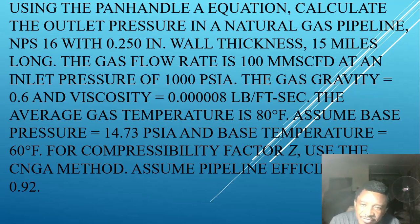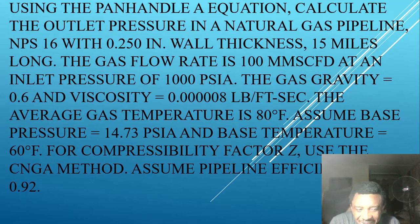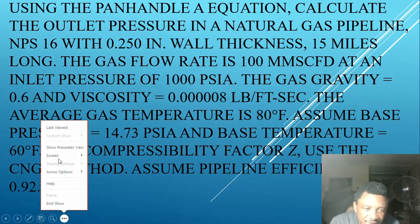The gas flow rate is 100 million standard cubic feet per day at an inlet pressure of 1000 psia. The gas gravity is 0.6 and viscosity is equal to 0.0008 pounds per feet seconds. The average gas temperature is 80 degrees Fahrenheit. Assume base pressure equal to 14.73 psia and base temperature equal to 60 degrees Fahrenheit. For compressibility factor Z, use the CNGA method. Assume pipeline efficiency of 0.92.